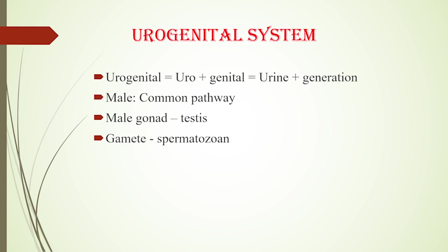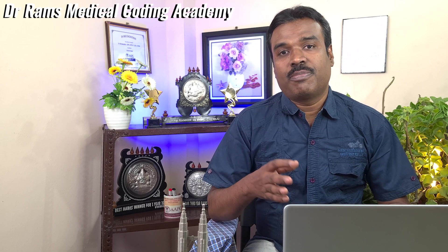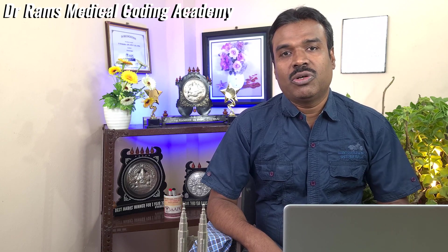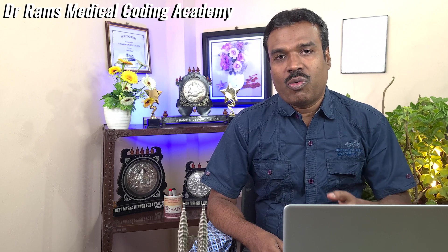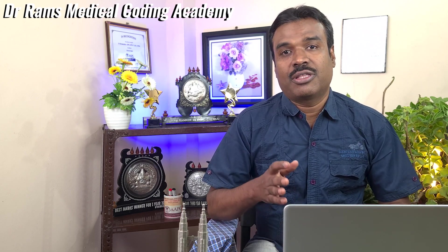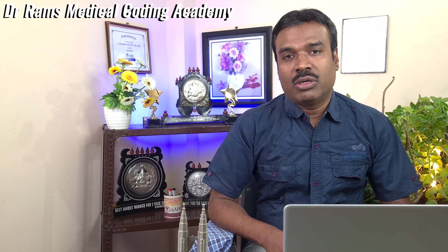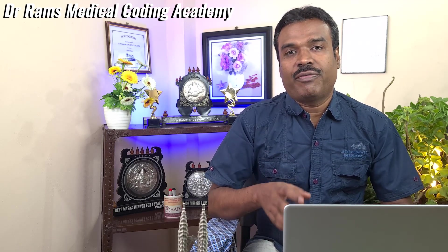Before talking about the genital system, we need to know about the male gonad or the male sex organ, which is the testis, and the male gamete — the mature spermatozoa, simply called sperm. You need to understand that semen and sperm are not synonymous. Sperm or spermatozoa is the mature male gamete or male cell found in the fluid called semen. Let's now move on to the urinary portion of the system.